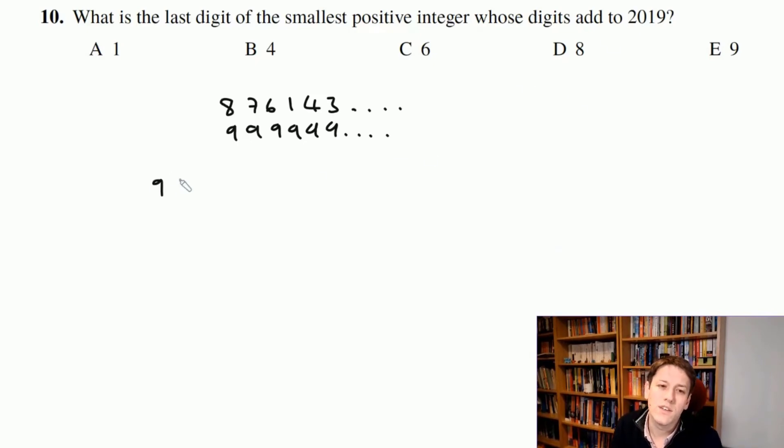If we do 2019 divided by 9, nines into 20 go two times, nines into 21 go twice with three left over, nines into 39 go four times with three left over. So I get that 2019 is equal to 224 times 9 with remainder 3. So I can write that in this way. So the number that I'm looking for is going to have 224 nines, and somewhere it's going to have a 3. Now obviously I wouldn't put the three at this end to make it the smallest possible number. I am going to put the three at this end, and then that's a lot smaller. So the last digit of the smallest positive integer whose digits add to 2019 is going to be 9.